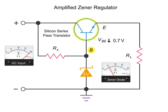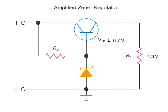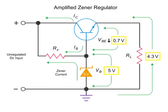The base of this transistor is connected directly to our 5 volt Zener diode. Keeping in mind the rule of 0.7, we can determine that the output voltage at the emitter will be 0.7 volts less than the voltage at the base, or 4.3 volts. Therefore, the voltage level at the RL load resistor will also be 4.3 volts. This variance in voltage levels facilitates the flow of current through the circuit.